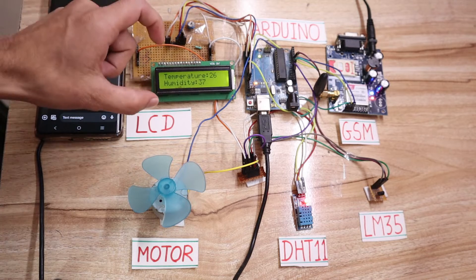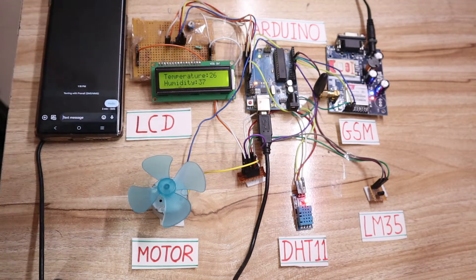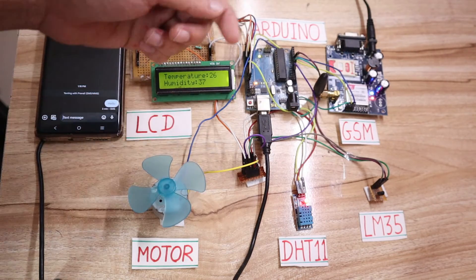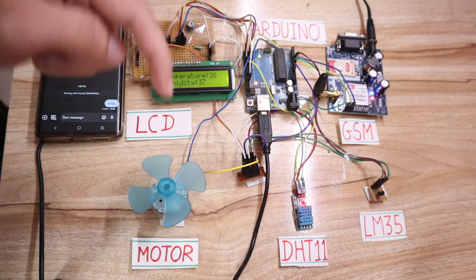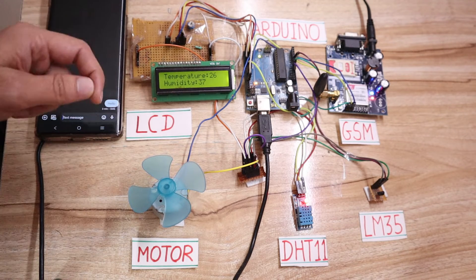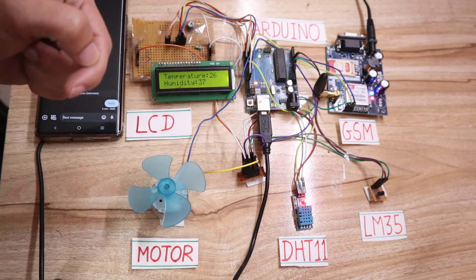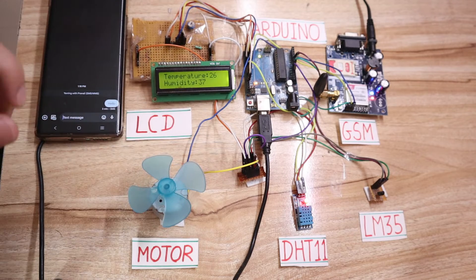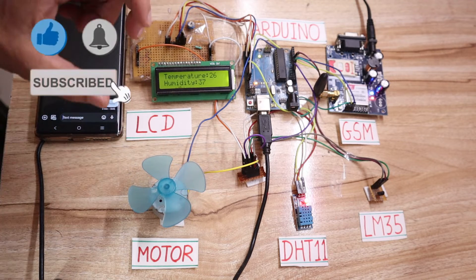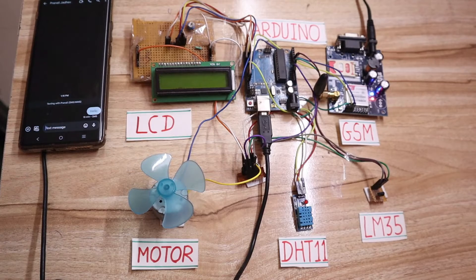The flow of this project: temperature and humidity values are continuously displayed. The temperature value is taken from the LM35 and humidity from the DHT11. If the temperature is greater than 30 degrees Celsius, the fan automatically turns on and the GSM 900 sends a message to your mobile saying the fan is on due to high temperature, along with the temperature value. If temperature is below 30, the fan turns off.